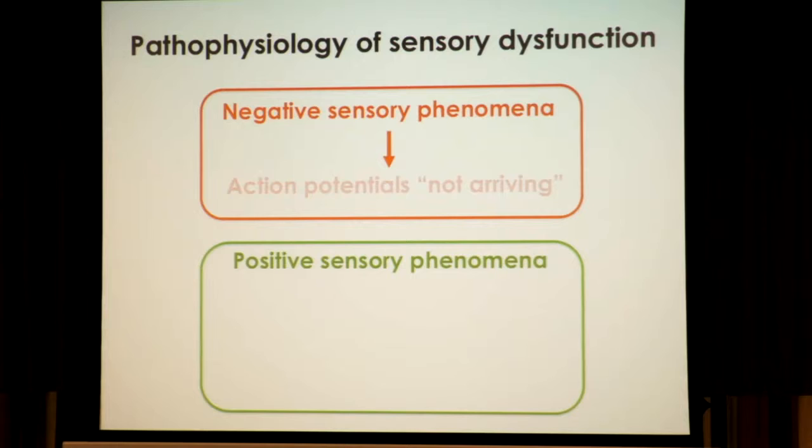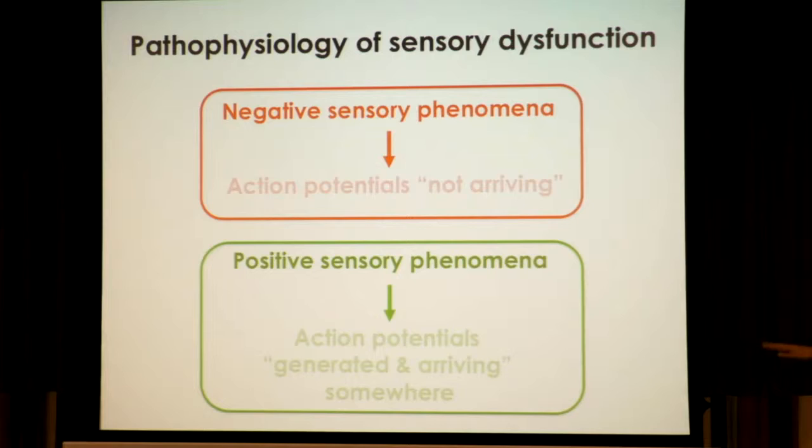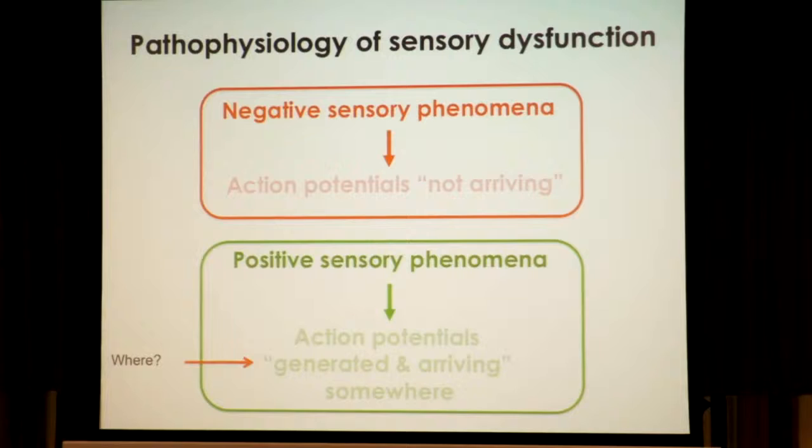The contrary is also very important, and this is where microneurography has a role. Positive sensory phenomena — like pain or paresthesias — necessarily means there are action potentials being generated somewhere and arriving somewhere else. I will try to answer the first question: where are these action potentials being generated? If a patient with peripheral neuropathic pain — say, a diabetic patient — has pain, it's because there are action potentials, so where are these action potentials being generated? That's a very fundamental question.